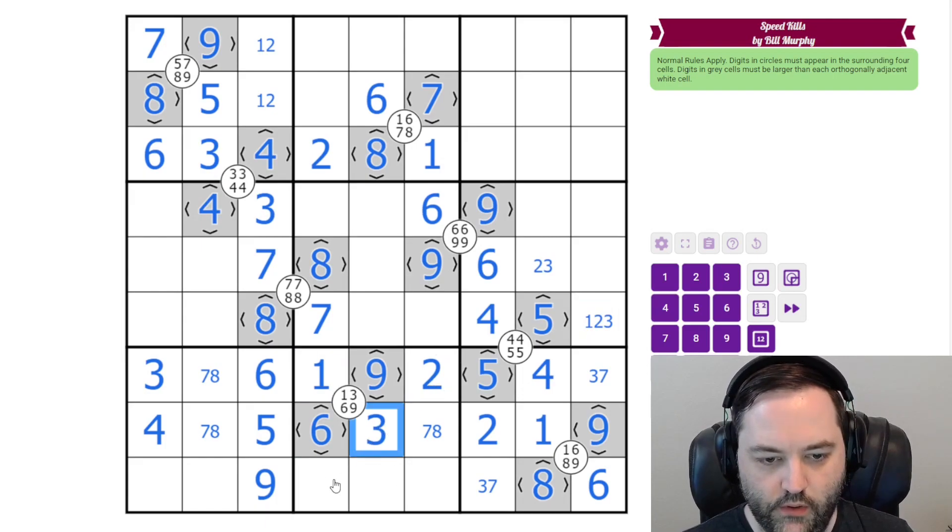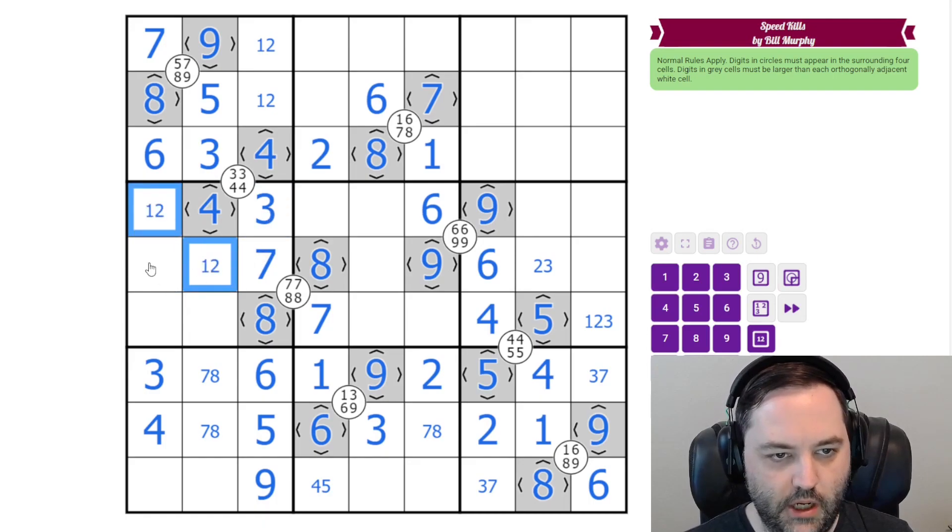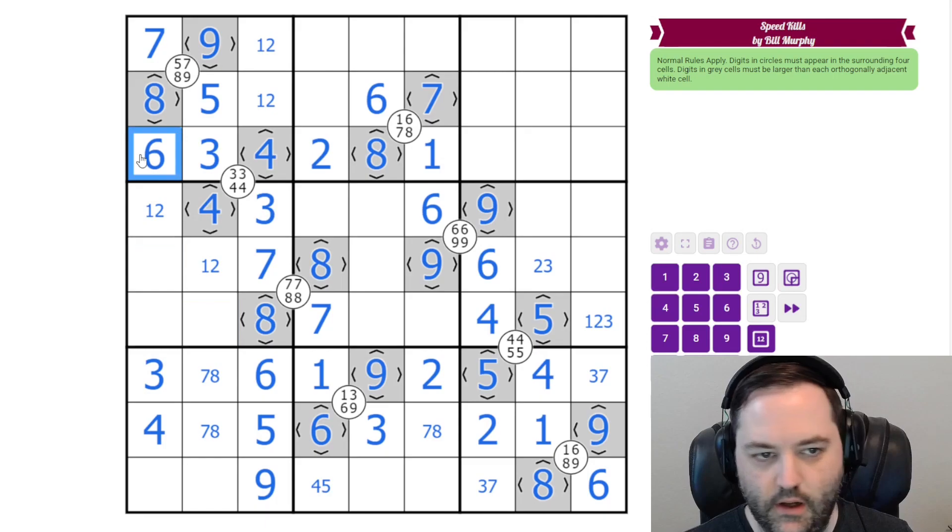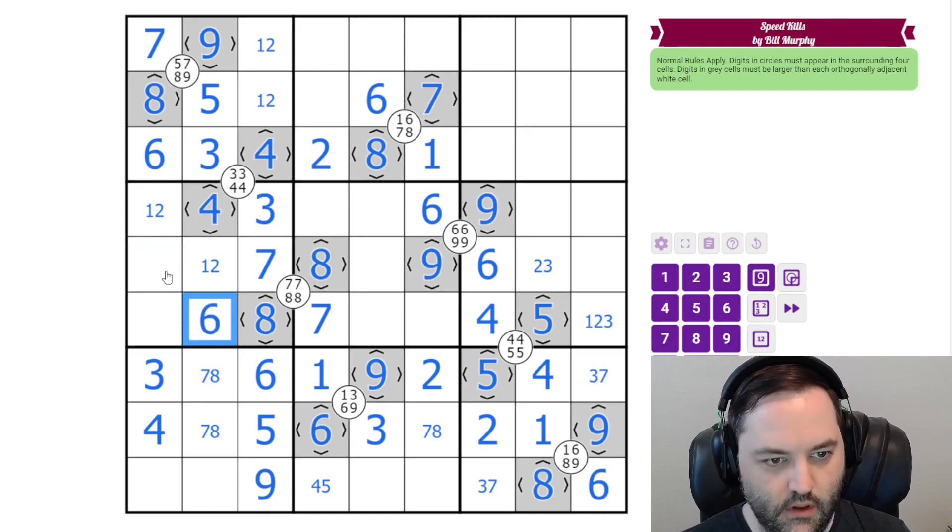This one cannot be 1, 2 or 3, so it's 4 or 5. These both have to be less than 4 and not 3, so they're a 1, 2 pair. That's going to leave 5, 6 and 9 here. There's a 6, and 5 and 9 are placed by this 9.